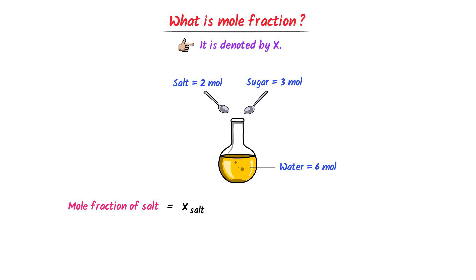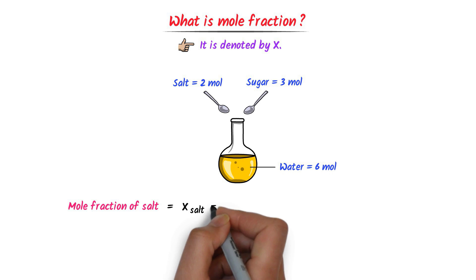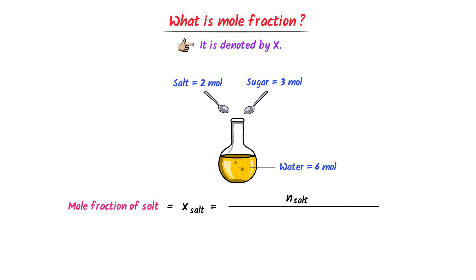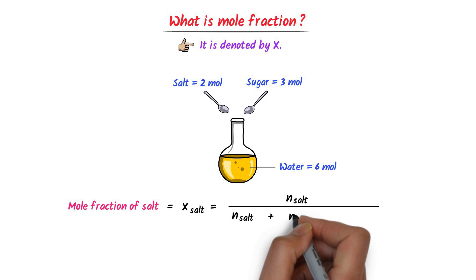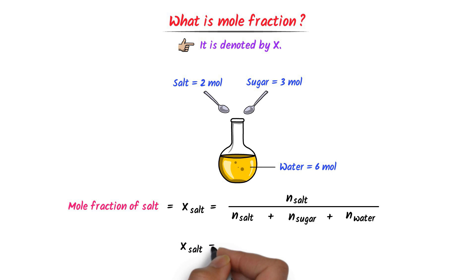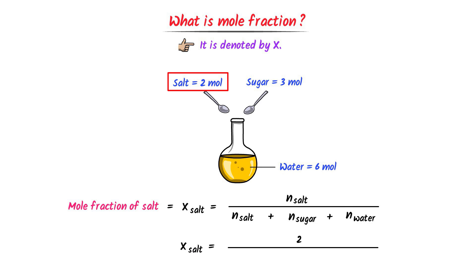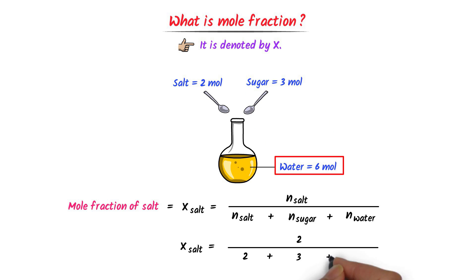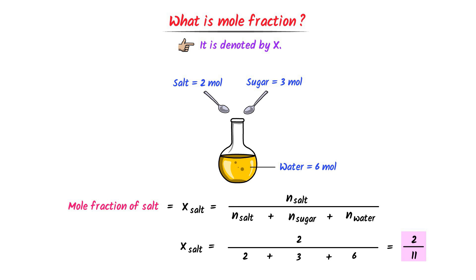To find the mole fraction of salt, I write number of moles of salt upon number of moles of salt plus number of moles of sugar plus number of moles of water. The number of moles of salt is two, sugar is three, and water is six. After calculation, I get two upon eleven.